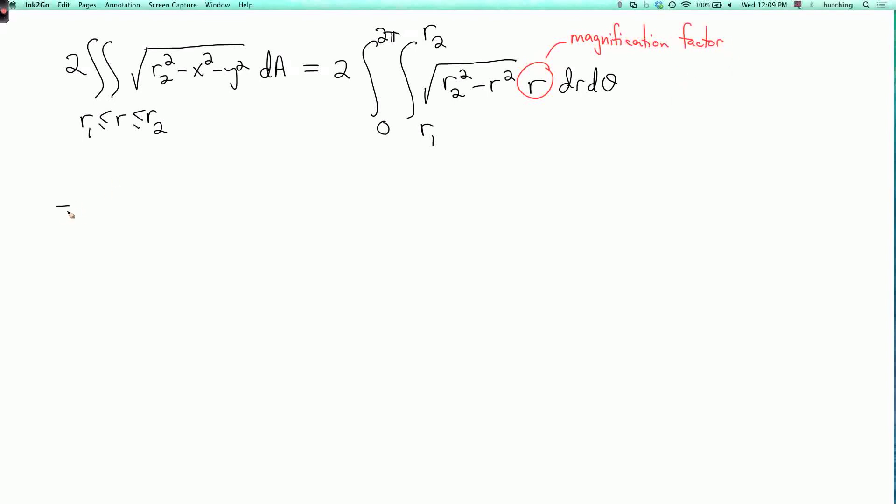Okay, now just as in the previous example, the antiderivative of this is minus one-third times r2 squared minus r squared to the three-halves. Because if I differentiate r2 squared minus r squared to the three-halves, I get three-halves times minus two r times the square root of this. So that's minus three times what I want, and then multiply by minus one-third fixes that. And I have to evaluate this at r equals r2 and r equals r1, and then integrate the result over theta.